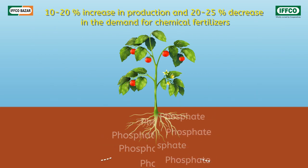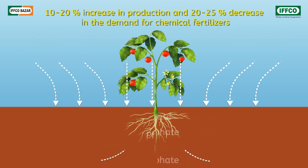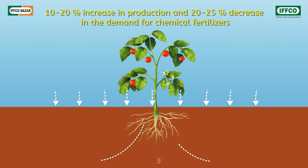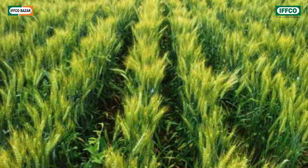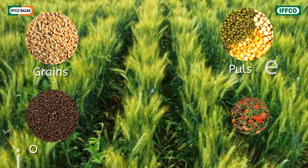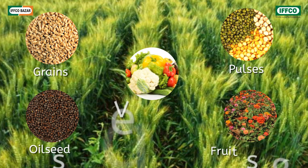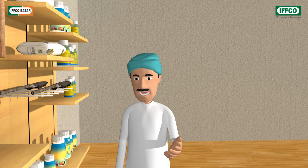This bacteria digests the inactive phosphorus and makes it available to the plants. This enhances productivity by 10 to 20 percent and reduces the demand for chemical fertilizers by 20 to 25 percent, and the soil retains its fertility.